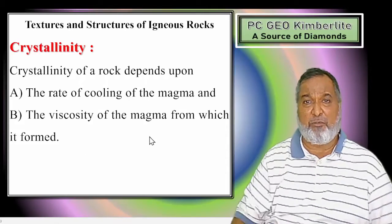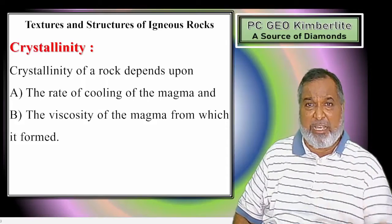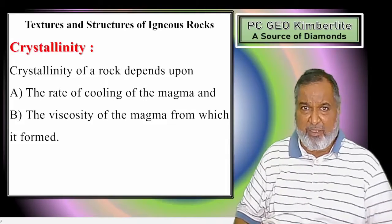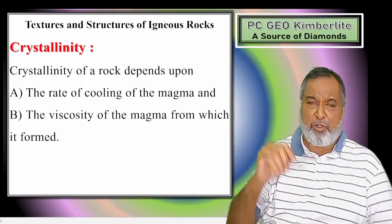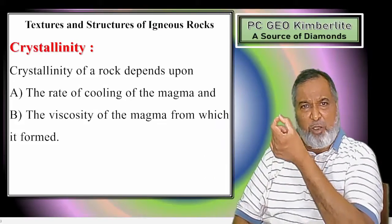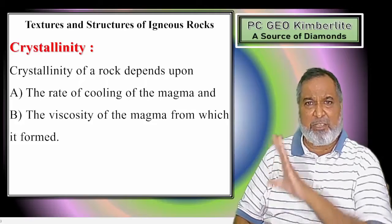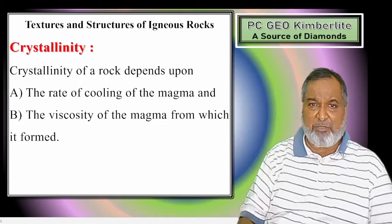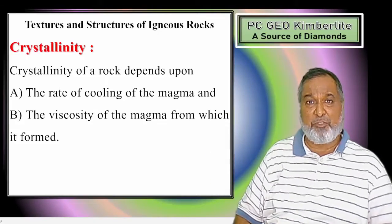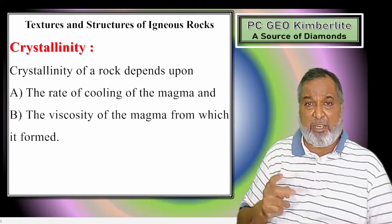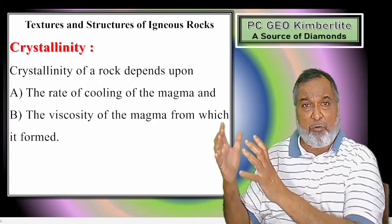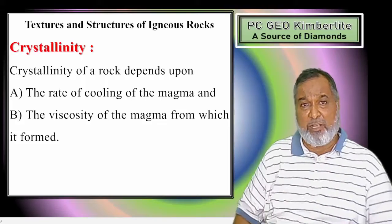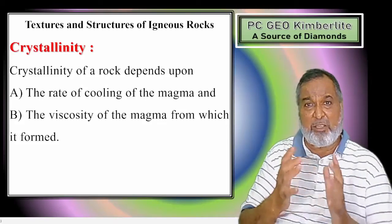Regarding viscosity: depending on how much silica is there in the rock, if silica is more, it behaves like a viscous oil. If you put one or two drops of oil on a slope, the oil moves slowly and after a certain distance it stops. But in the same way if you put water on that slope, water reaches much further. So if more silica is present it behaves like oil - high viscosity. If less silica is there it behaves like water - low viscosity.